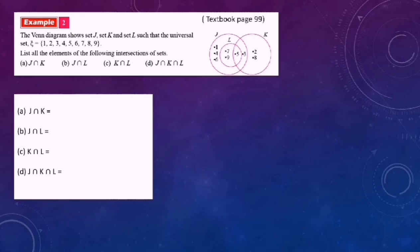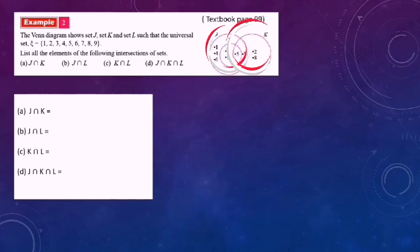Example 2: The Venn diagram shows sets J, K, and L such that the universal set equals {1, 2, 3, 4, 5, 6, 7, 8, 9}. List all the elements of the following intersections. For J intersect K, we find the common area of J and K. The answer is {3, 5}. For K intersect L, the answer is {5, 7, 9}.